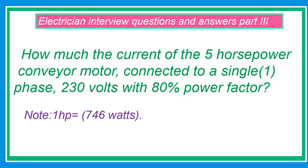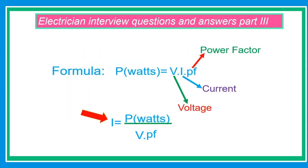How much is the current of a 5 horsepower conveyor motor connected to single phase 230 volts with 80% power factor? Note: 1 horsepower equals 746 watts. This is the power formula with respect to motors: P equals V times I times power factor, where V is for voltage, I is for current, and PF is for power factor. And if we are going to find the formula of current: I equals P over V times power factor.